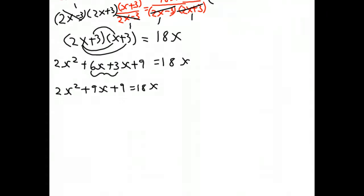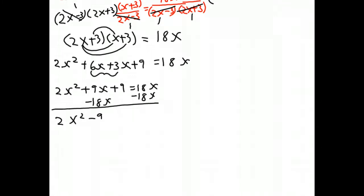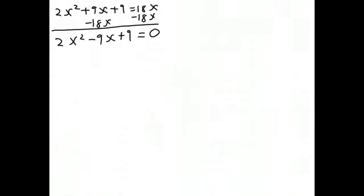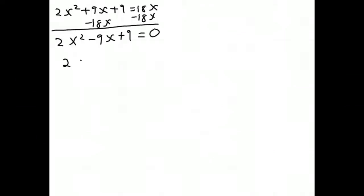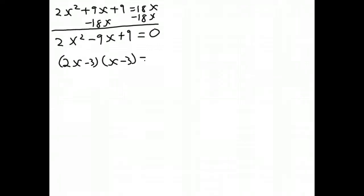You might recognize this as a quadratic equation. So we want to set one side equal to 0, and we move the 18x over to the other side by subtracting 18x from each side, and you get 2x squared minus 9x plus 9 is equal to 0. Now we either are going to have to use the quadratic formula or we can factor this. It is factored into 2x minus 3 times x minus 3 equals 0.